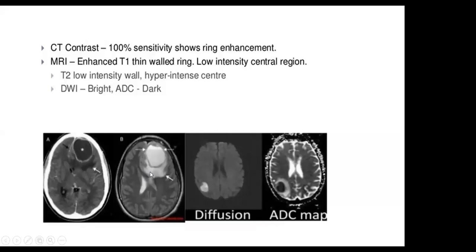Briefly, cerebral abscess on CT shows ring enhancement and hypodense content, with vasogenic edema that may subside as the abscess progresses toward late encapsulation. On T2, there is hyperintense signal content with hypointense capsule. Diffusion-weighted imaging and ADC map show restricted diffusion — so we can say that's essentially 100% diagnostic of abscess.